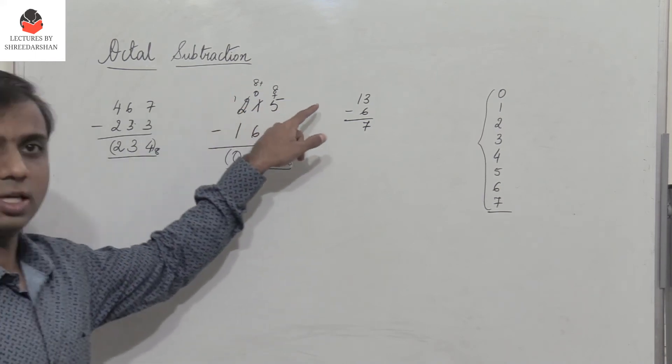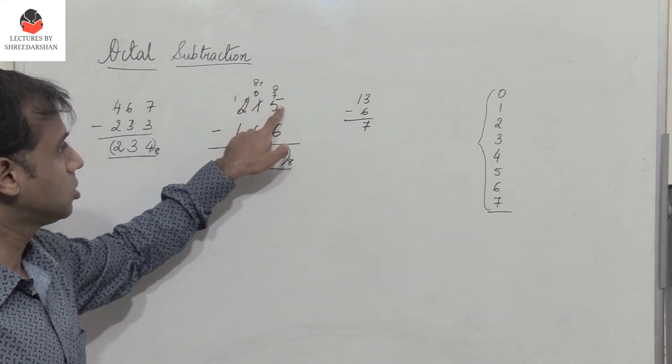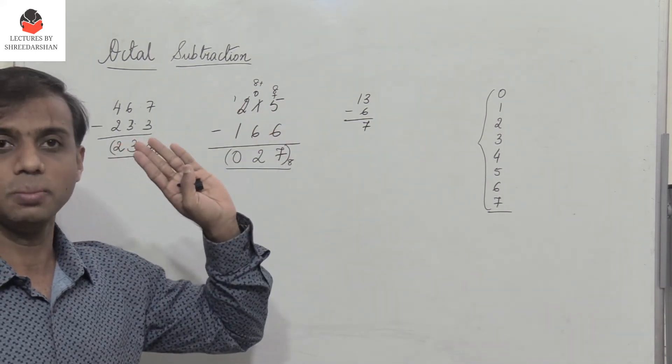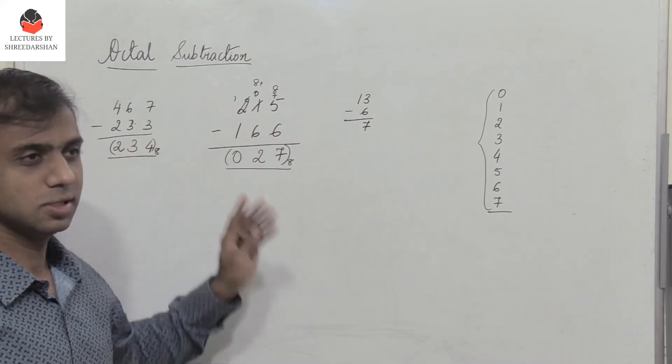So when you take a borrow from the previous stage, you have to add 8 to the given number is what you need to remember. If you remember this, then octal subtraction is very easy.